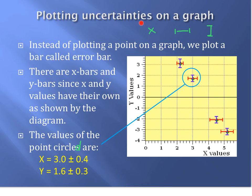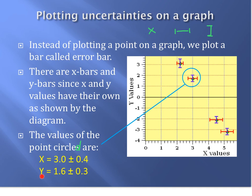To plot uncertainties on a graph, instead of marking a single point with a cross, you plot an error bar — a range for x and a range for y showing minimum and maximum. When both x-bar and y-bar are combined, it looks like two bars crisscrossed. A specific example point is shown, where x has its own uncertainty and y has its own uncertainty.